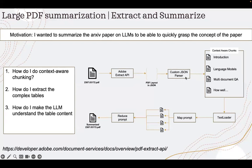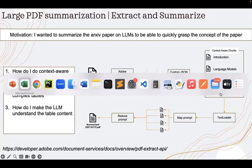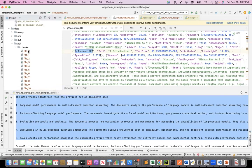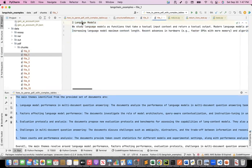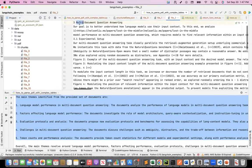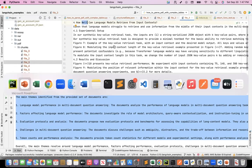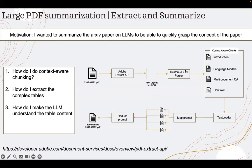Then I wrote a custom JSON parser to parse the JSON and chunk this PDF into respective sections. For example, I had a separate introduction chunk, language model chunk, and multi-document QA chunk. When I chunked it, I was able to chunk the abstract and introduction together, then section two in a separate chunk, section three in a separate chunk, section four in a separate chunk. I was able to chunk it into contextual sections — context-aware chunks. So this was my extraction part.